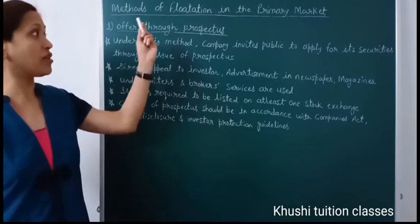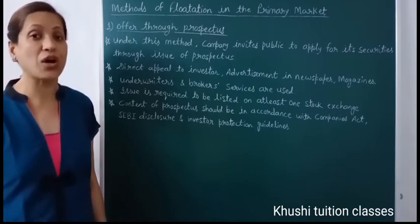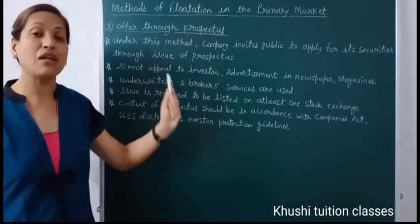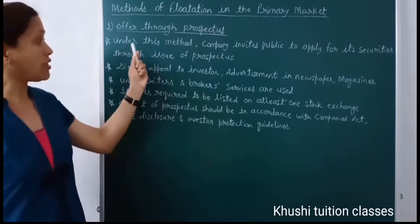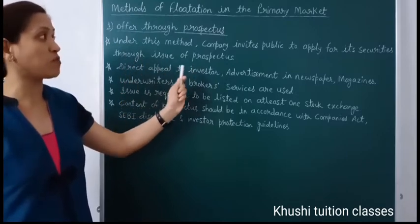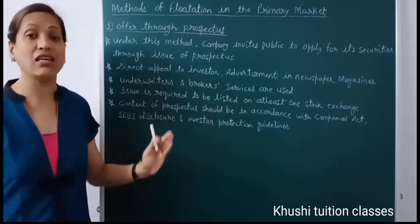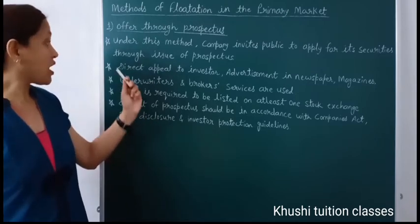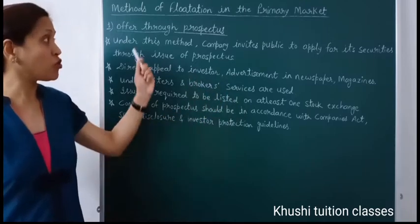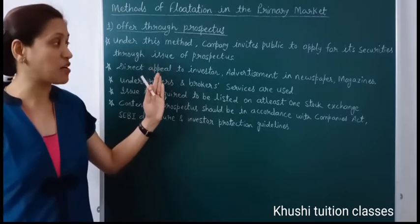Now we start with methods of flotation in the primary market. There are various methods to issue new securities in the primary market. The first method is offer through prospectus. Under this method, the company invites the public to apply for its securities through the issue of a prospectus. This method involves a direct appeal to investors, with advertisement in newspapers and magazines.